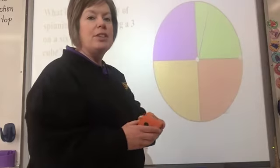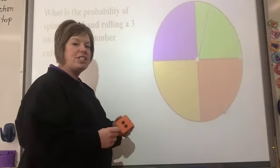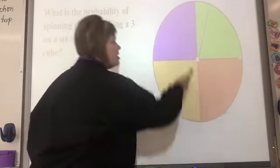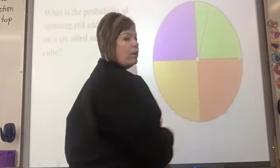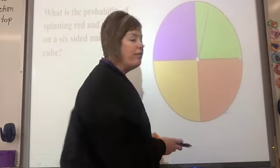The first thing I'm going to do is put the probability of each separate event. So, spinning the spinner, I have 1 red section out of 4. So my first fraction is 1/4.